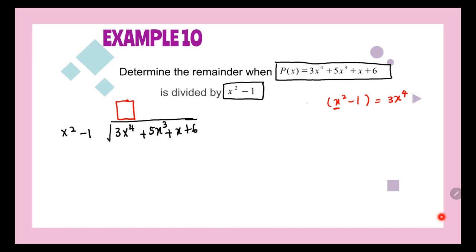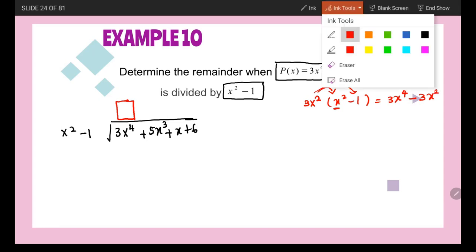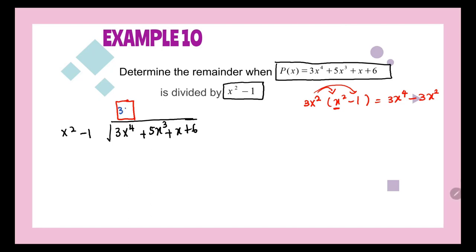We will be focusing on x², so 3x² times x² gives 3x⁴, and 3x² times negative 1 gives negative 3x². So the term we write in our box is 3x². When we multiply 3x² with x² minus 1, we get 3x⁴ minus 3x². Then we subtract: 3x⁴ minus 3x⁴ gives 0, and 5x³ minus 0 remains.